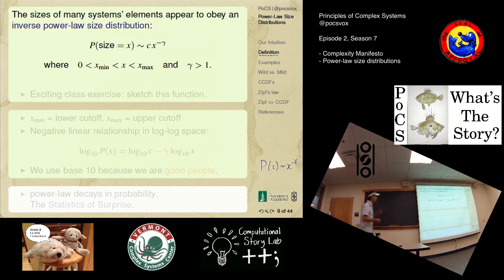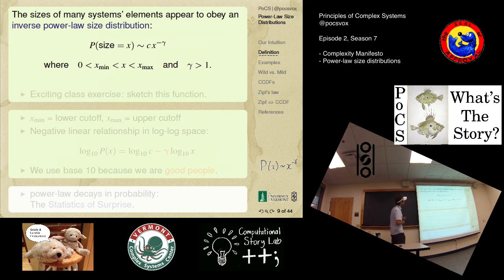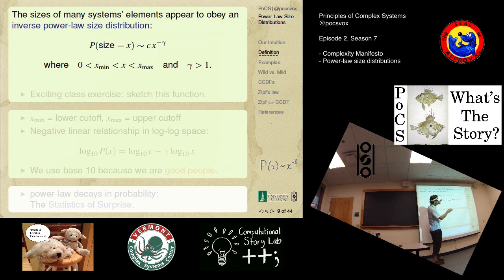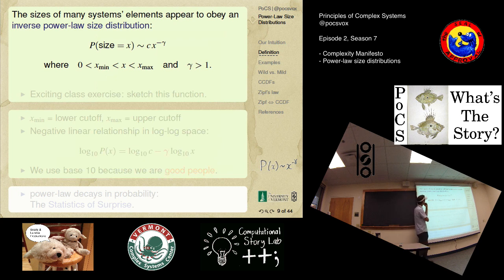Let's talk about power law size distributions. I've got some other examples of these things as well. We'll talk a little bit about words, because words are a fun example. Lots of things about systems — how things scale, whether they fall apart — all those sorts of things. This is just looking at the parts of many kinds of complex systems. For networks it might be how many friends a node has, for example — that might be its size. Organizations — I'll give you some examples.